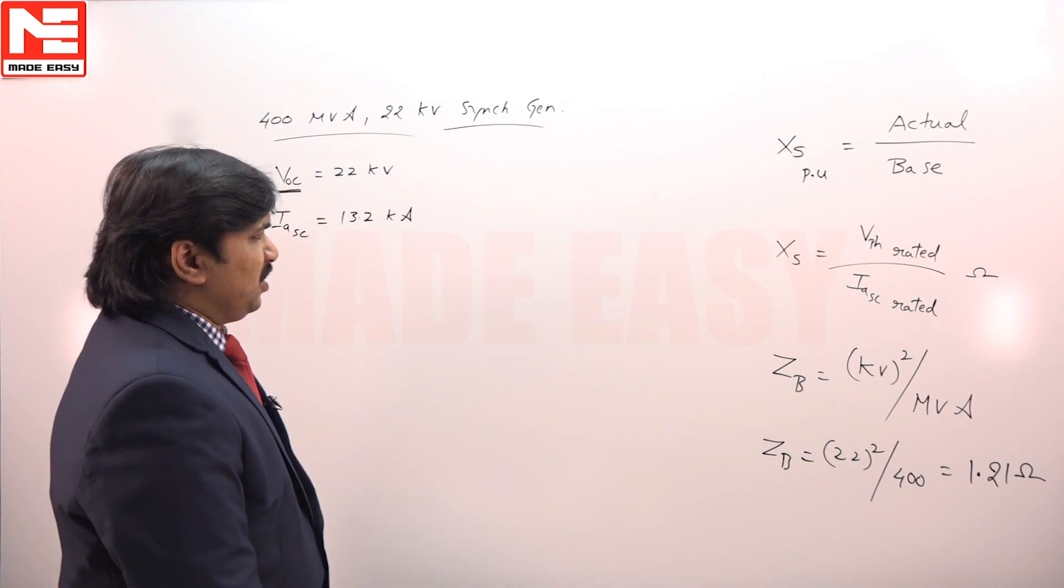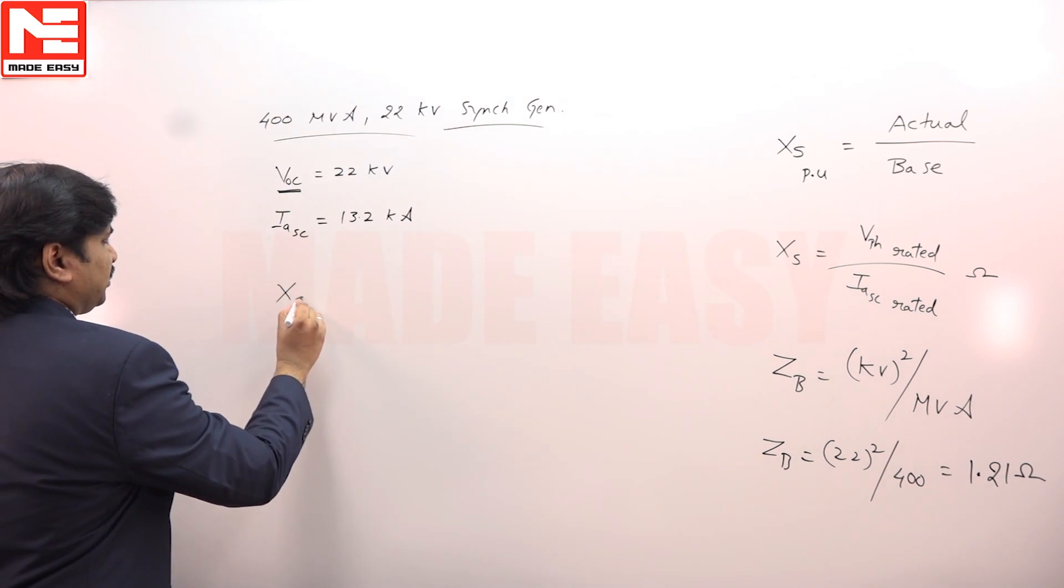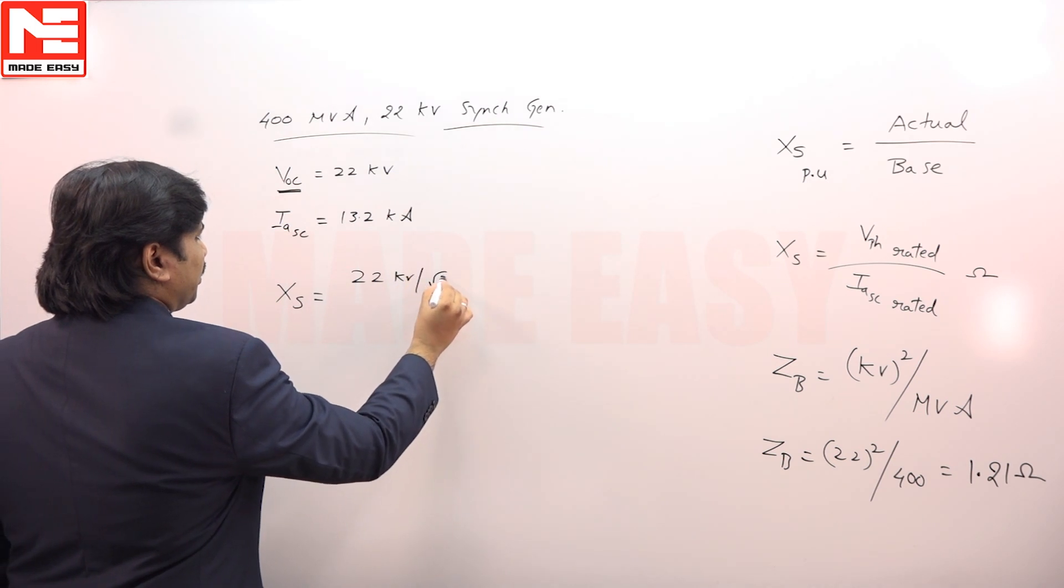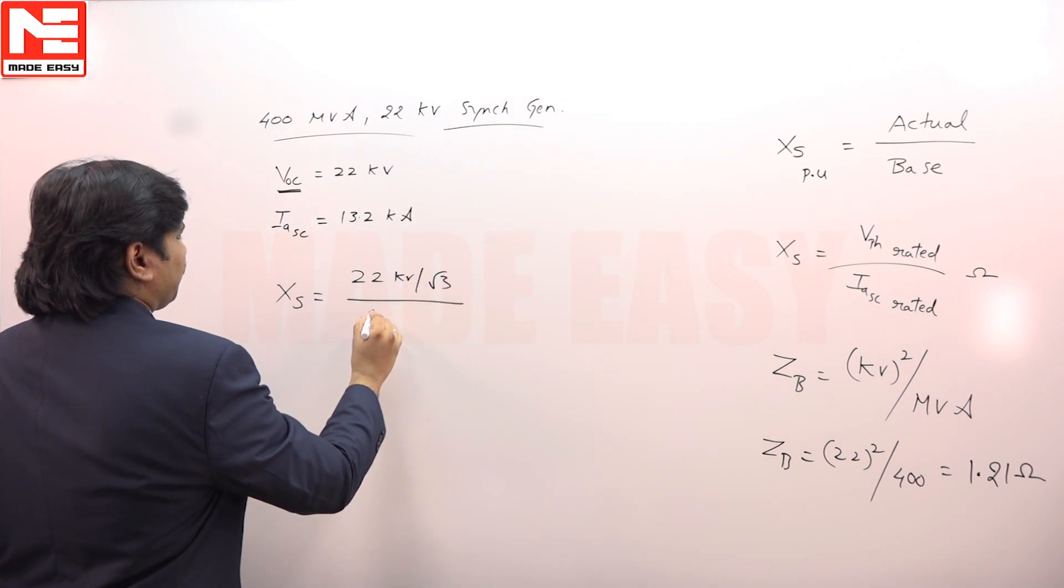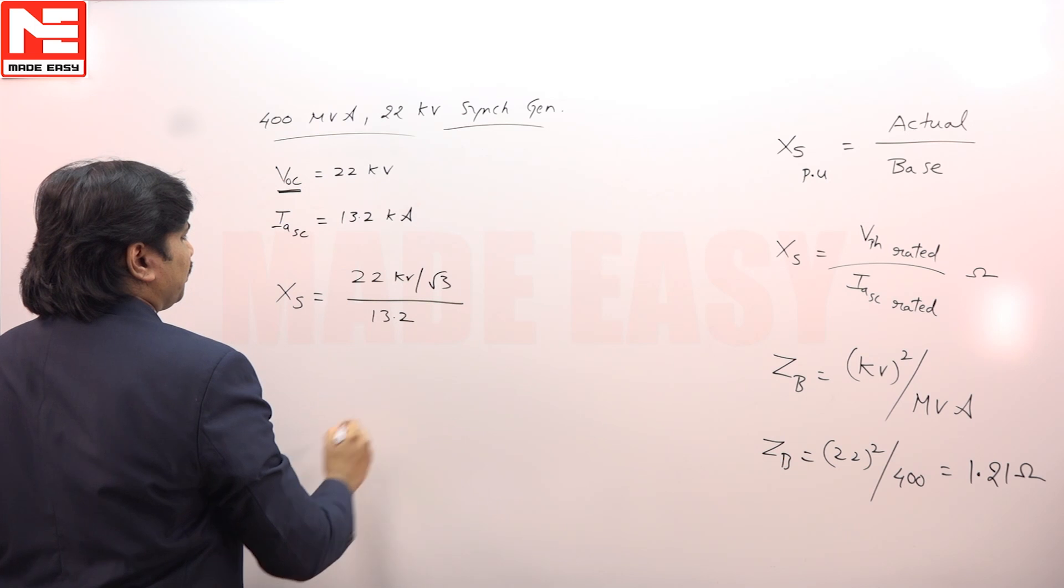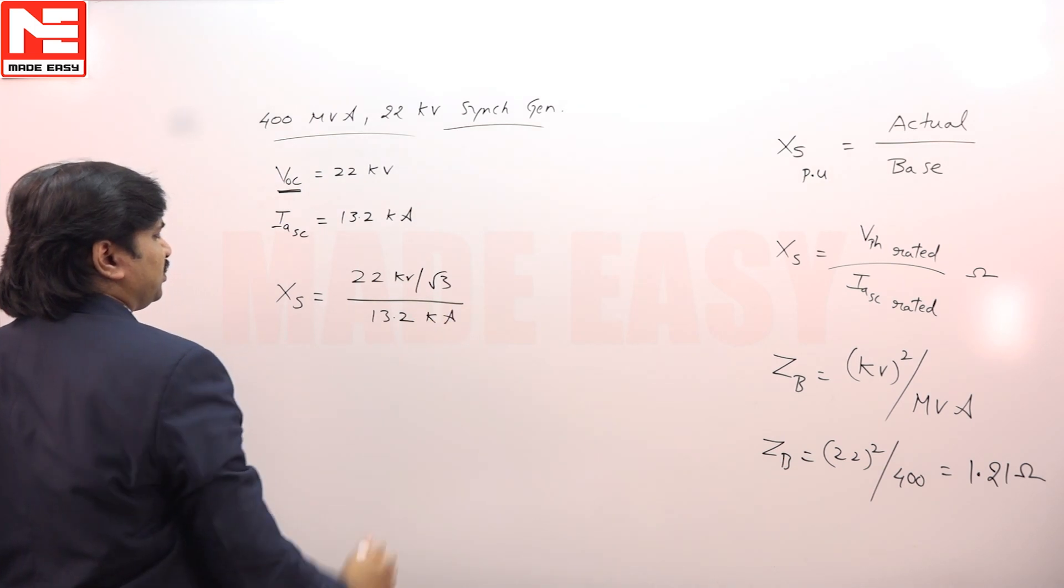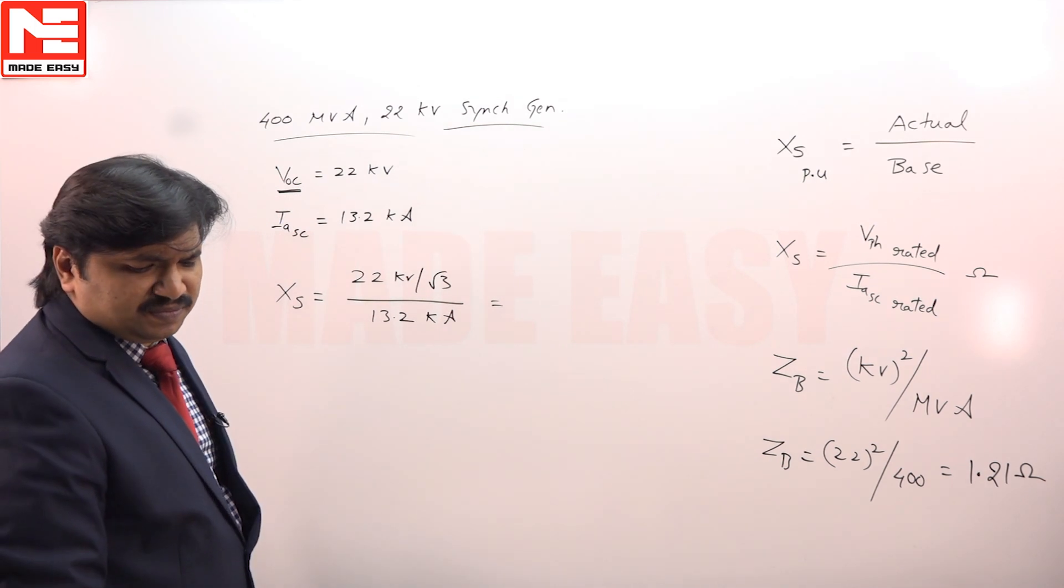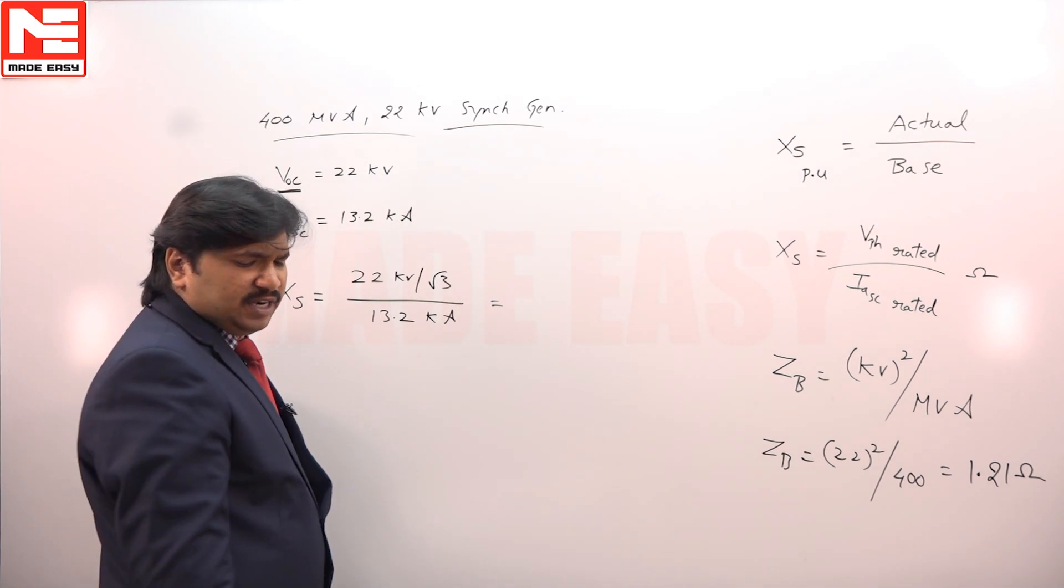How to calculate excess? As the data is given to you, everything is per phase: 22 kV by root 3 by 13.2 kilo amperes, which is 0.962.